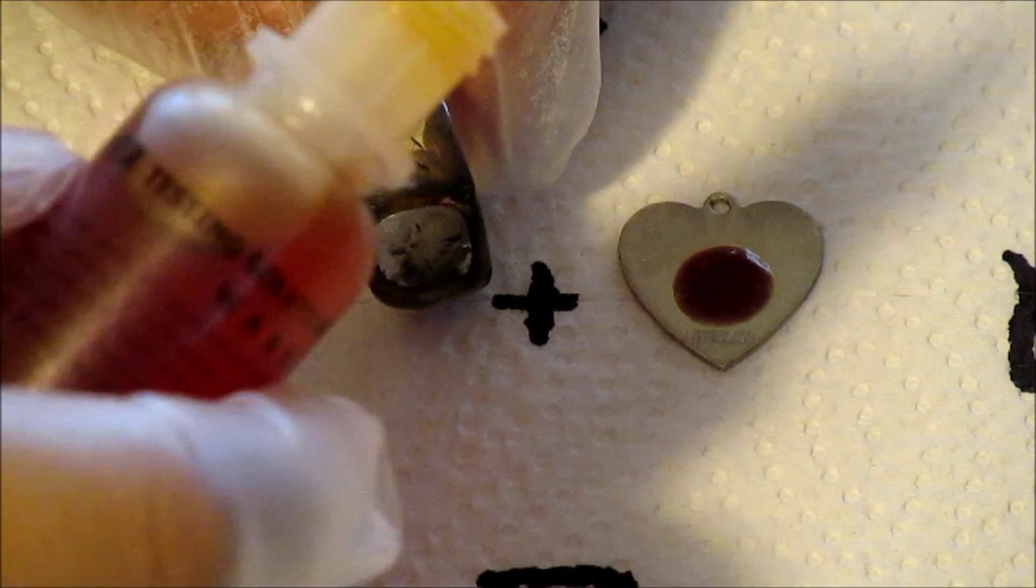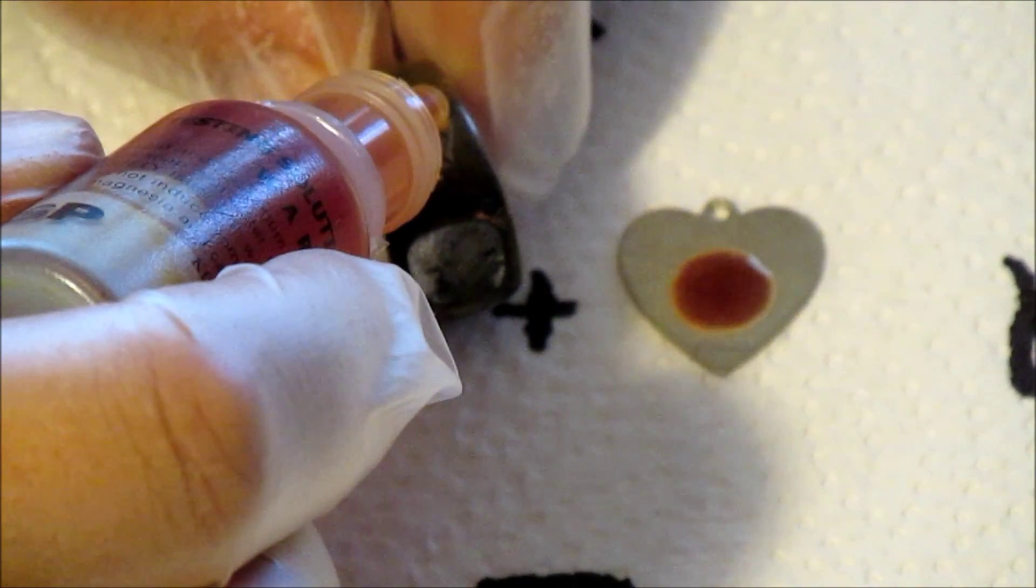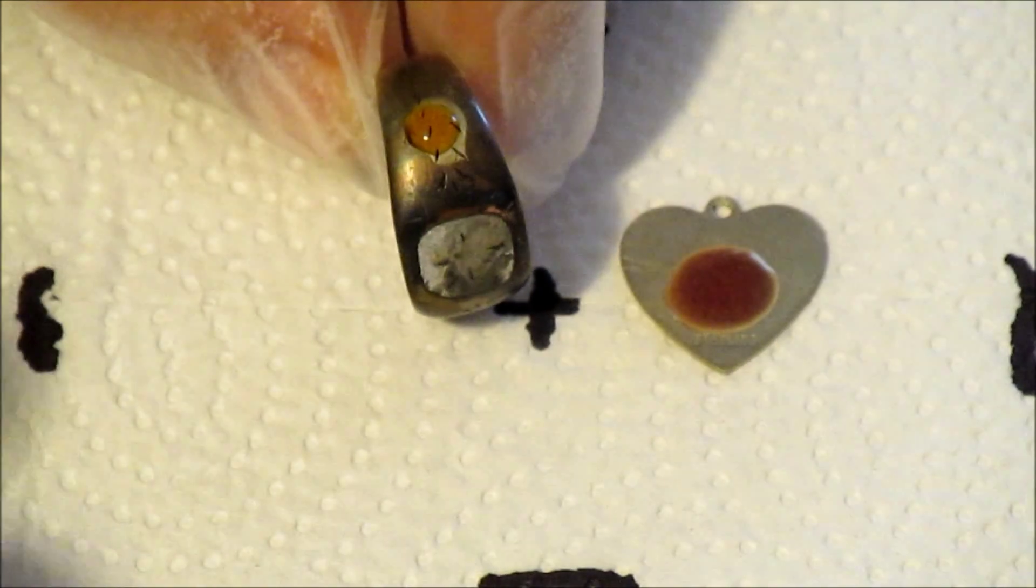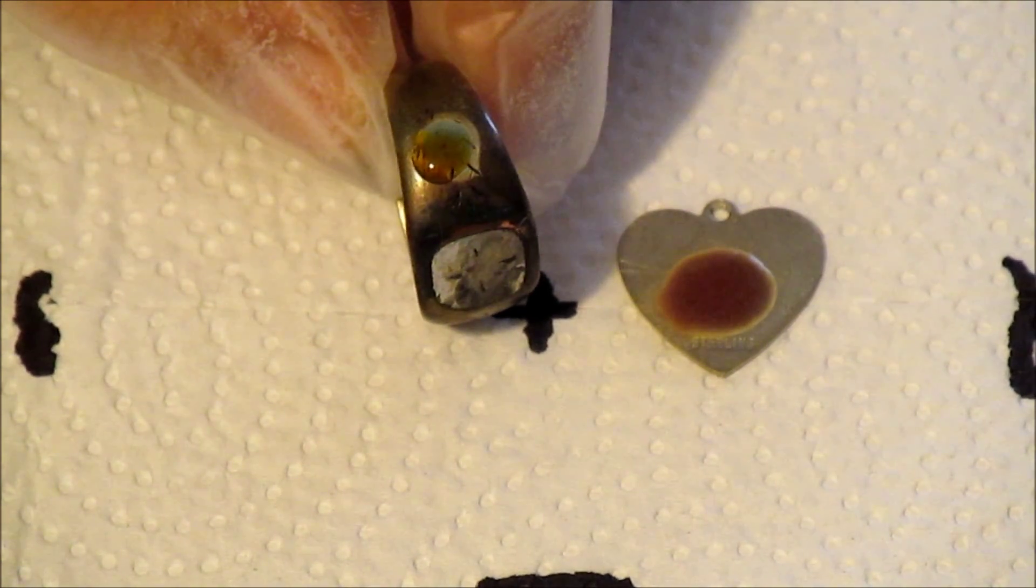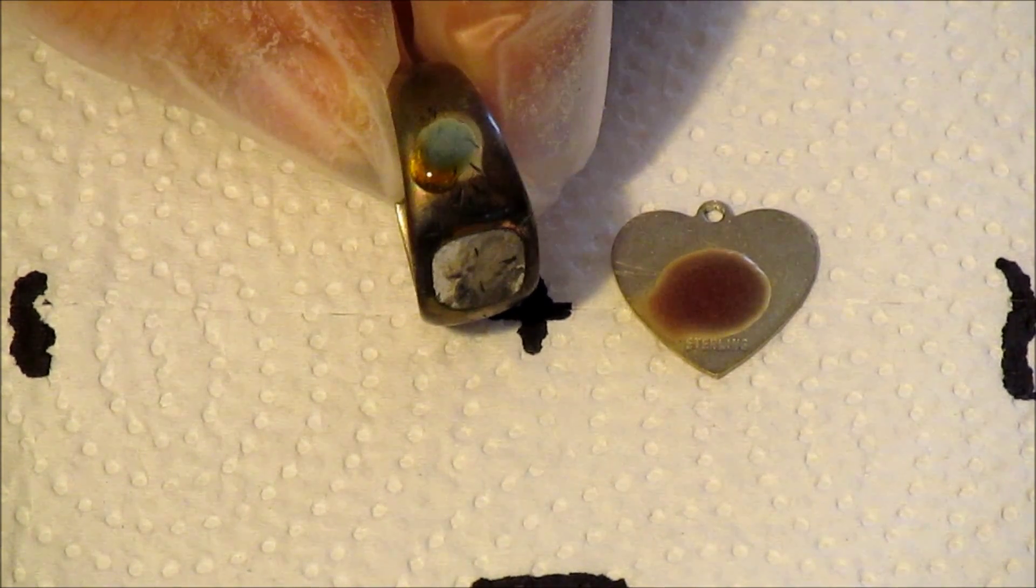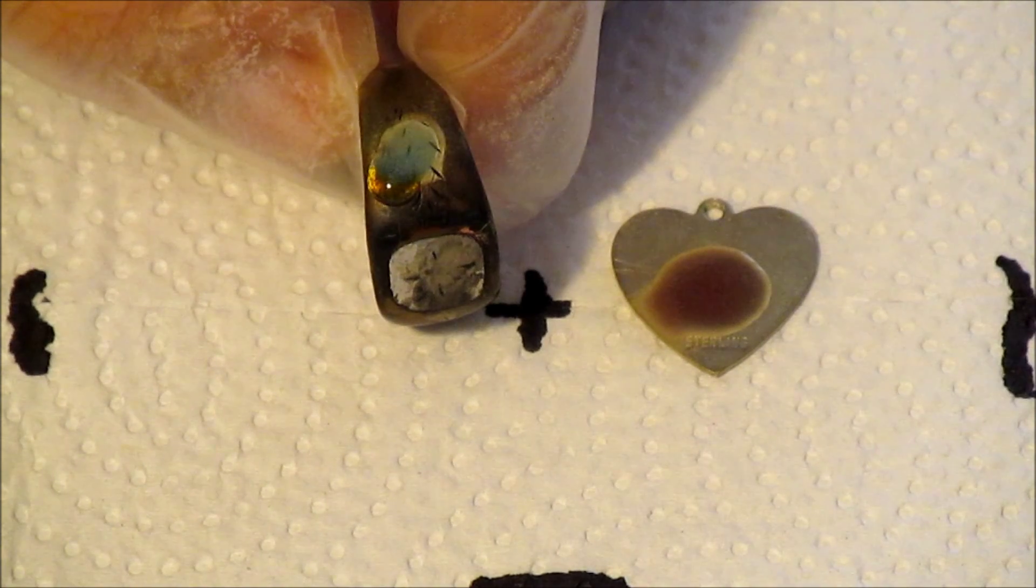As you can see, it's turning green. That means there isn't silver in it, or if there is, it's a very low amount and it has a lot of copper or nickel in it.